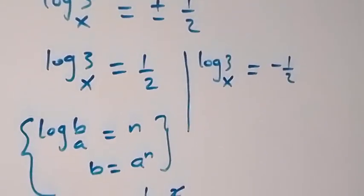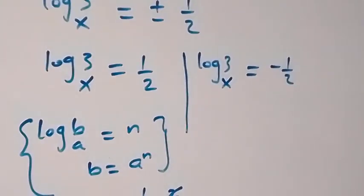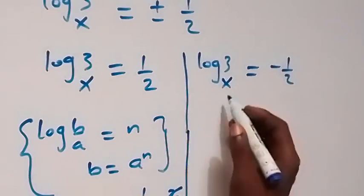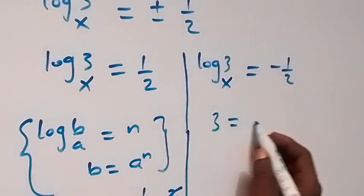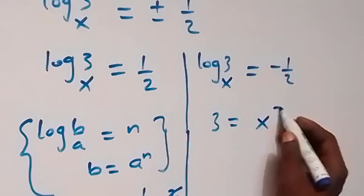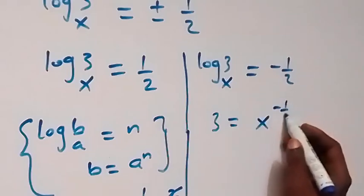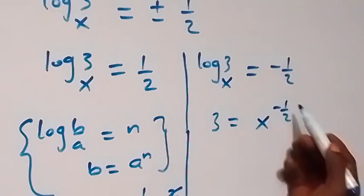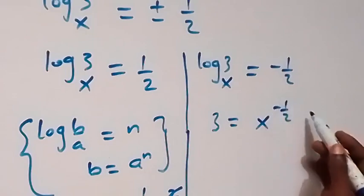For the second case, we apply the same process: 3 equals x raised to the power minus 1/2. To remove the minus 1/2 power, we raise both sides to the power minus 2.